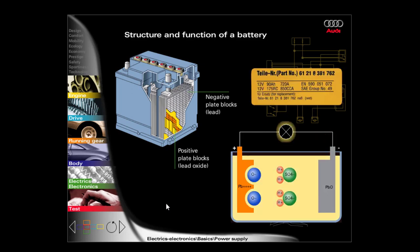The rated voltage and the rated capacity are specified on the battery rating plate. The rated voltage is generally 12 volts. The rated capacity specifies the volume of current which may be supplied to or withdrawn from the battery, measured in ampere hours.